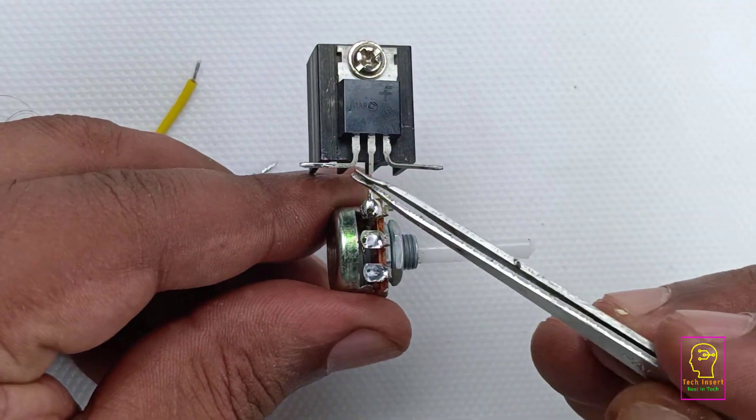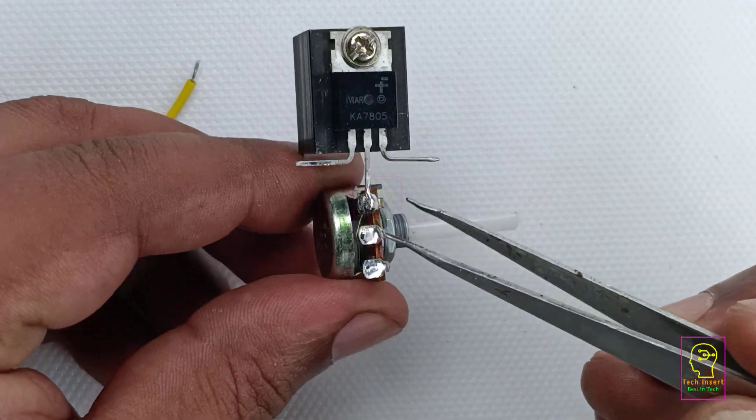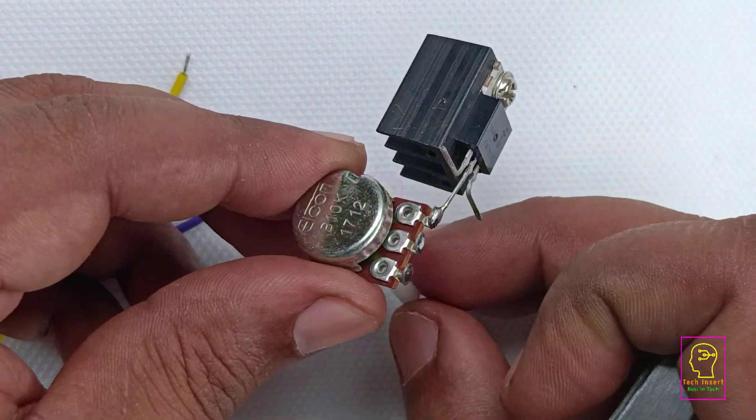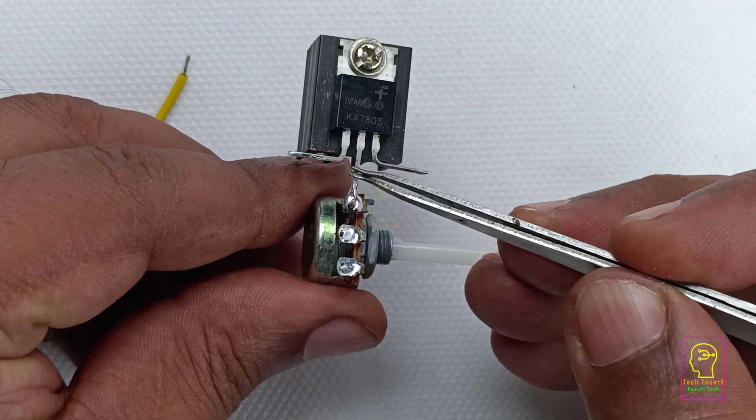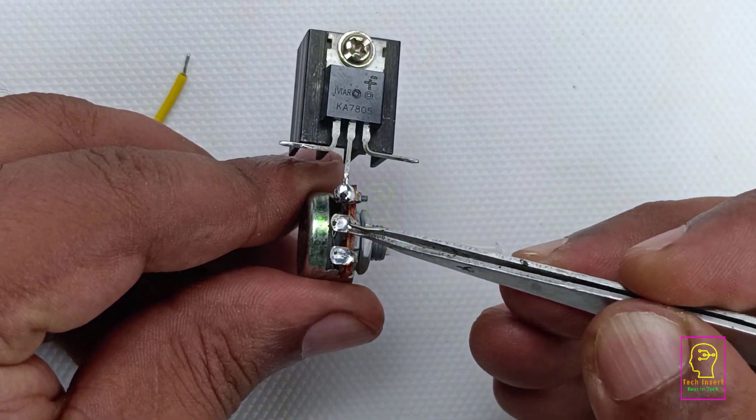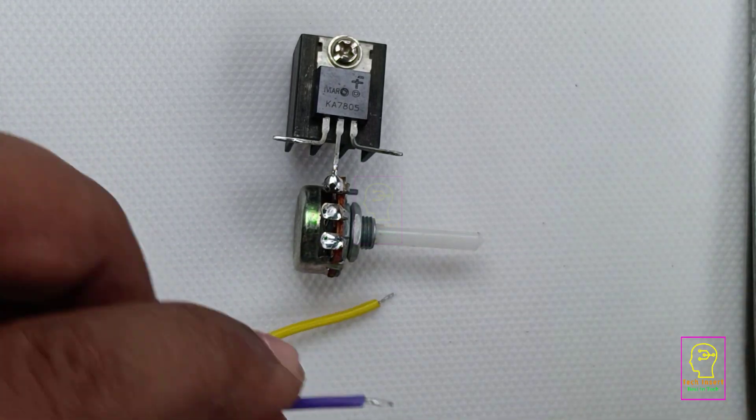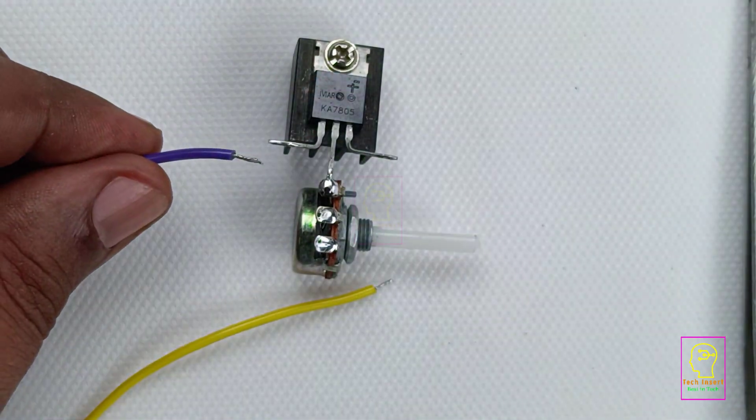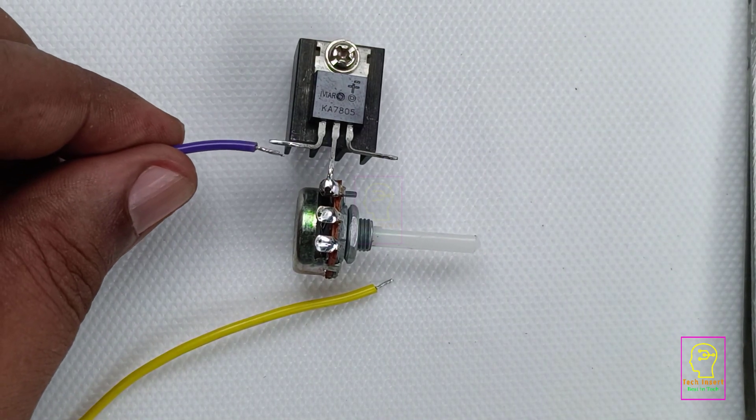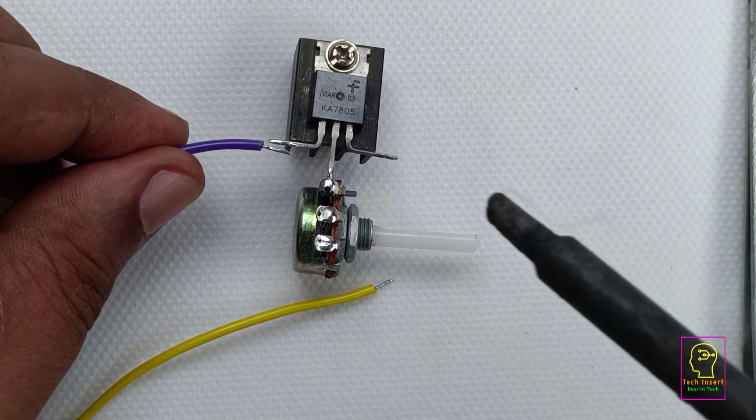This is the input terminal, this is the ground, this is the output terminal, and one terminal of the 10k preset I have connected to the ground or ground pin of the 7805 fixed voltage regulator. Now I will connect the wires to the input supply pin.